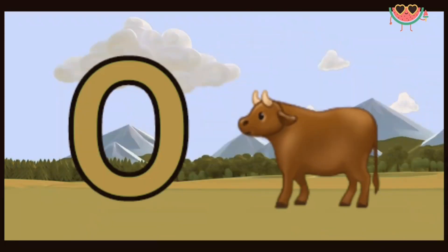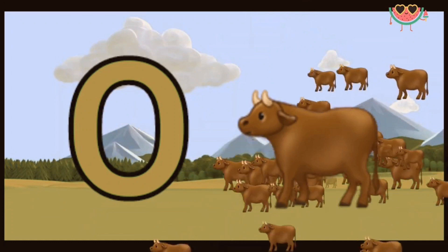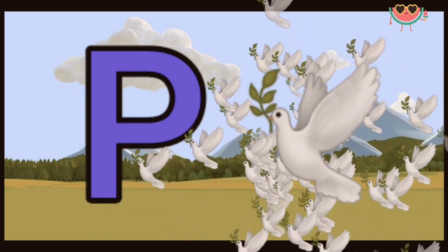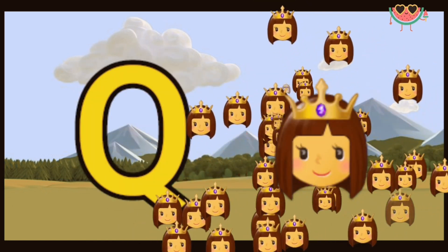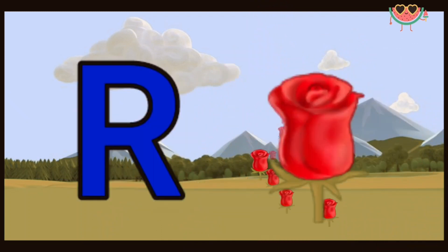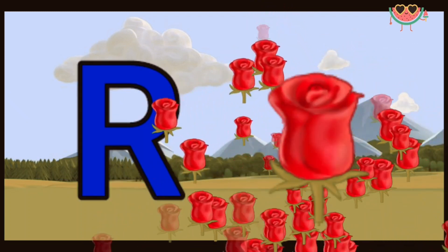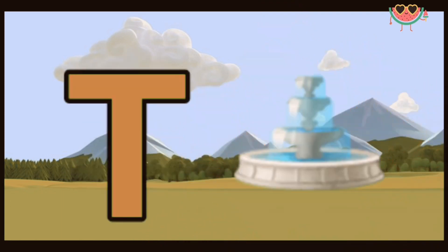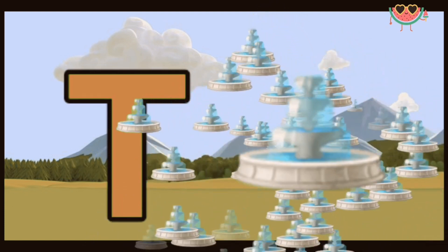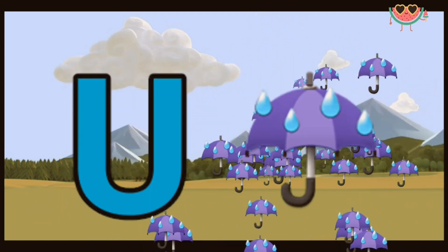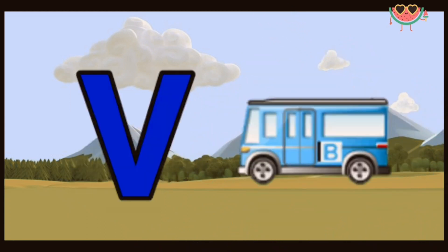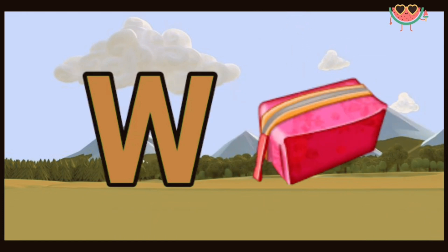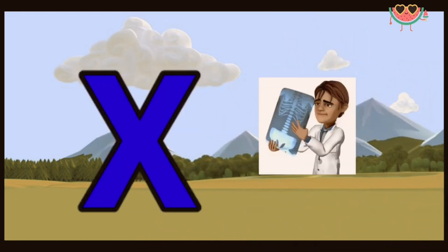O for ox, P for pigeon, Q for cute, R for roach, S for sun, T for tap. U for umbrella. V for one, W for wallet, X for x-ray.